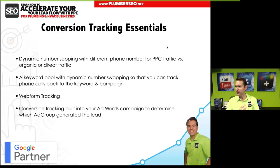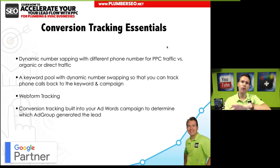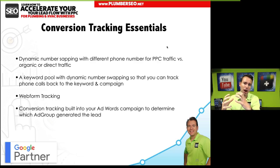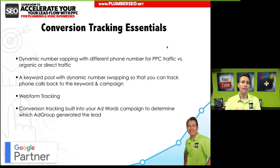Julian says he uses CallRail for that — that's the same system we use. It's great for dynamic swapping and pulling all that information into your AdWords campaign. There are lots of systems — CallCap, Mongoose MetroX — and you want to make sure whichever you use is properly set up so you can leverage the data to make adjustments or let Google's AI make adjustments to maximize lead flow and minimize cost per lead.